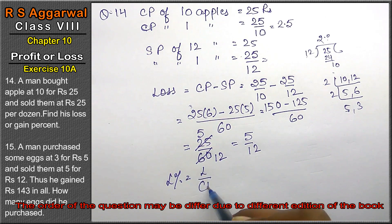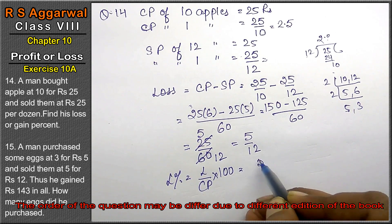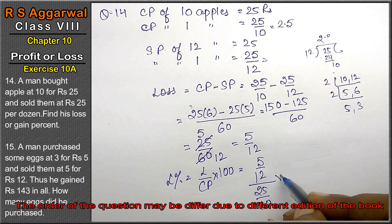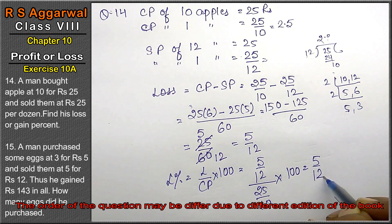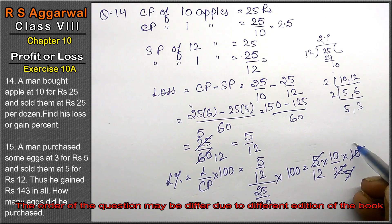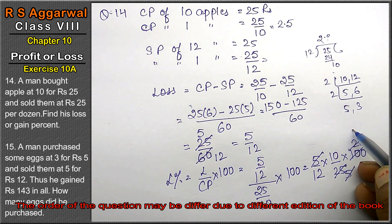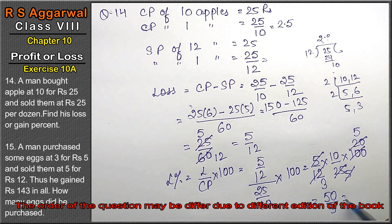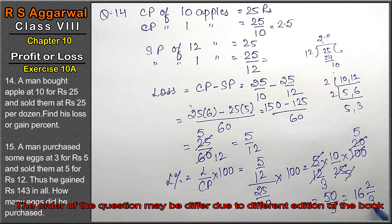Loss percentage formula is loss upon CP into 100. Loss is 5 upon 12, CP is 25 upon 10. So loss% = (5/12) ÷ (25/10) × 100. After simplification, we get 50 upon 3, which equals 16⅔ percent. That is the answer.